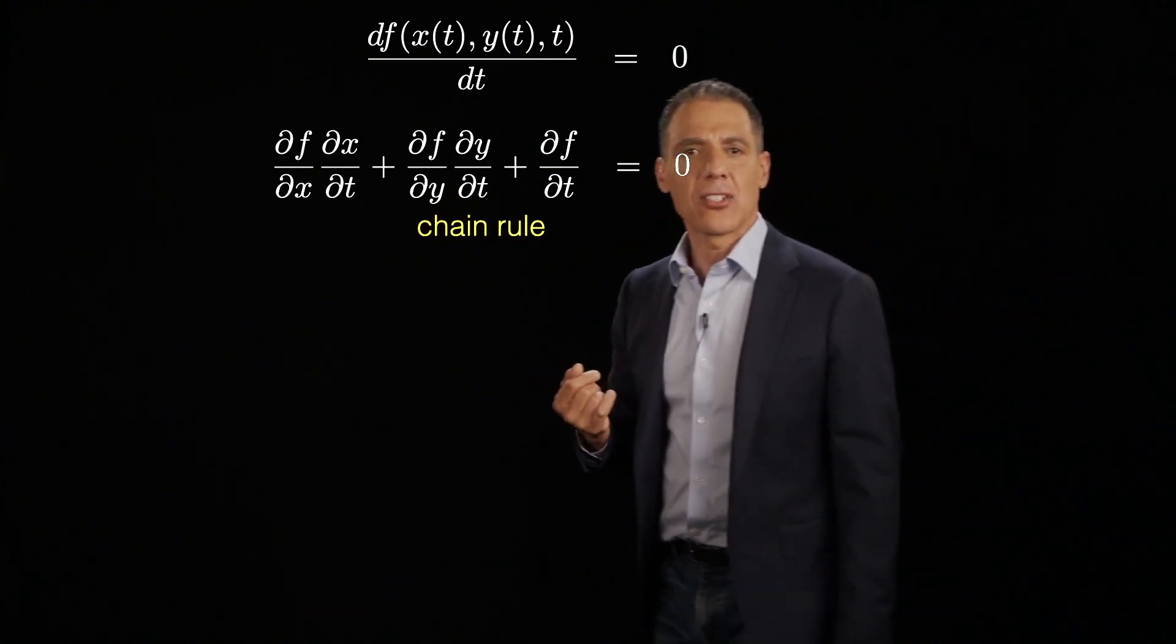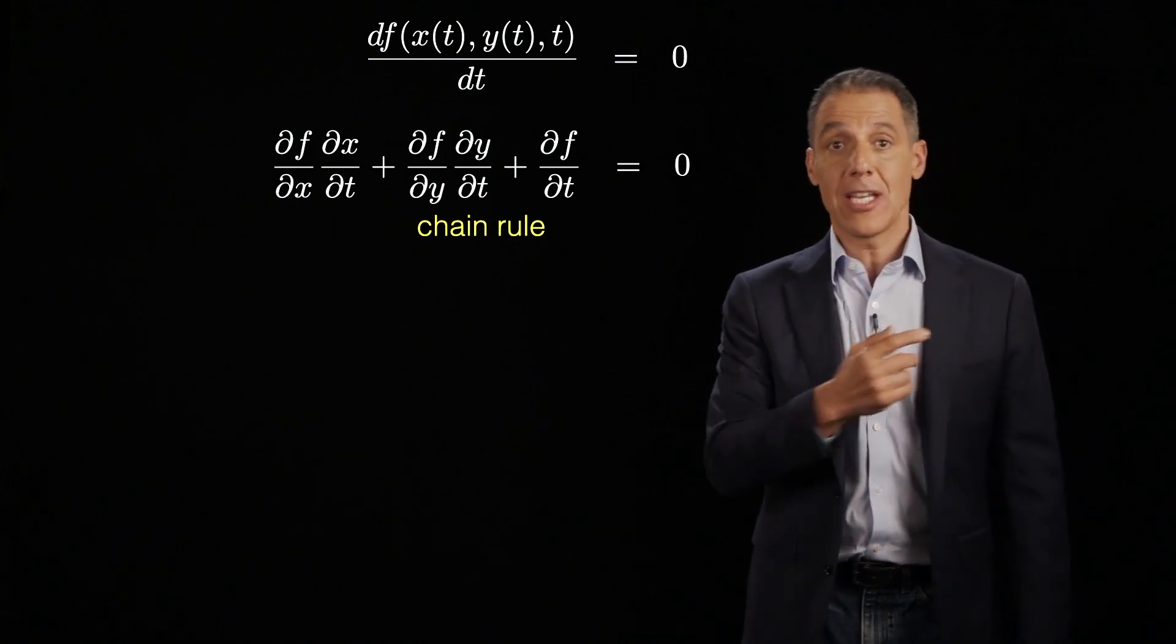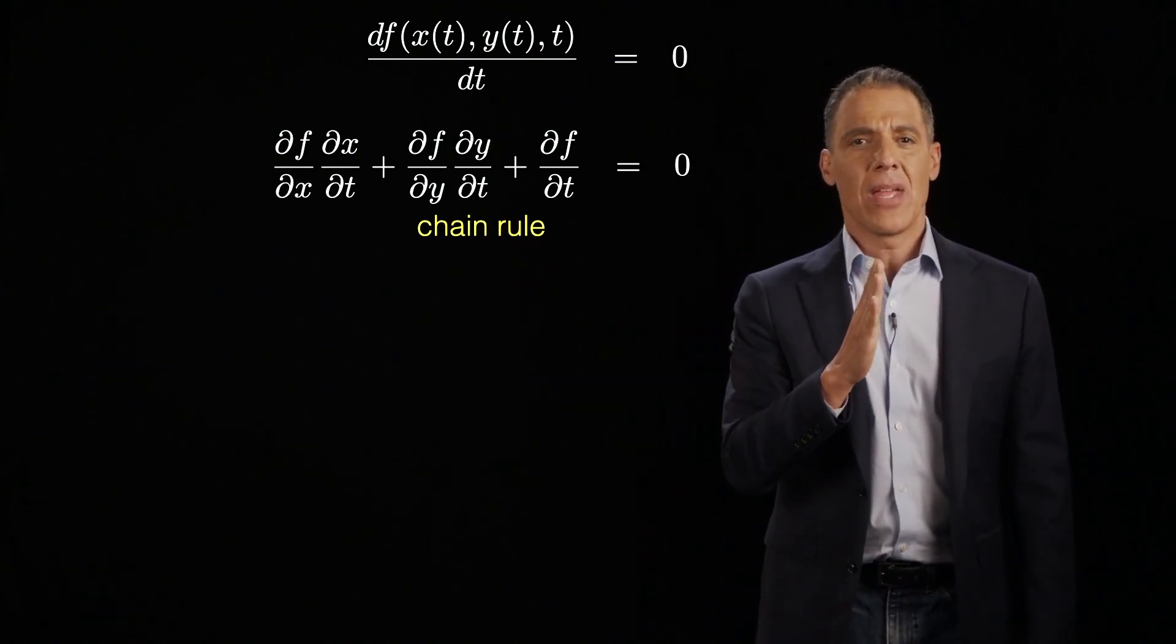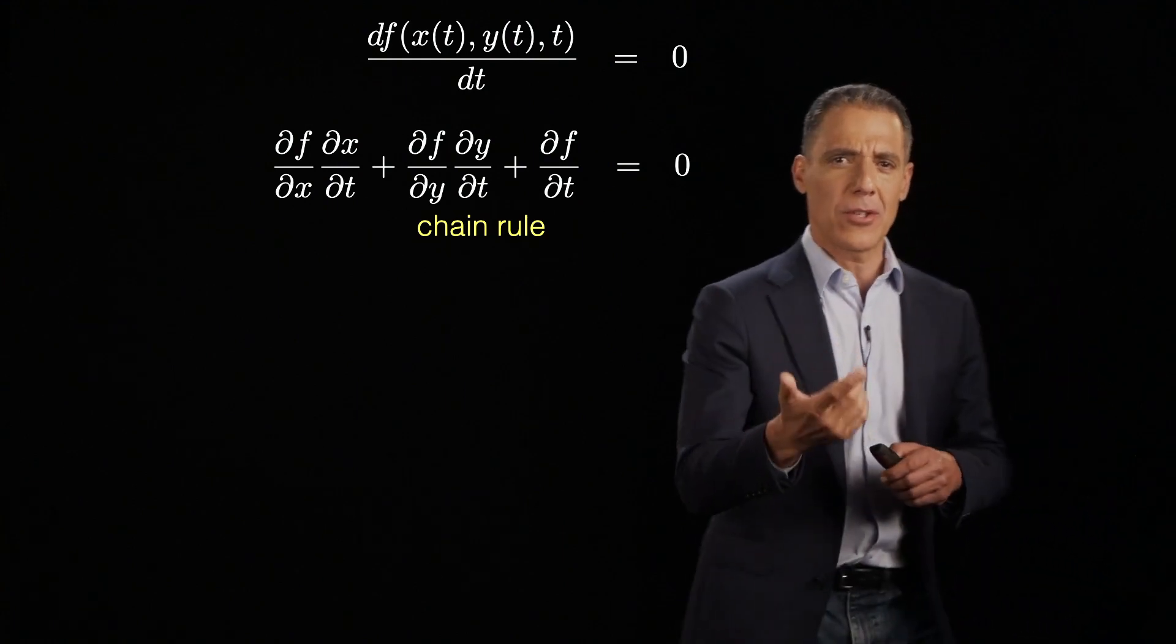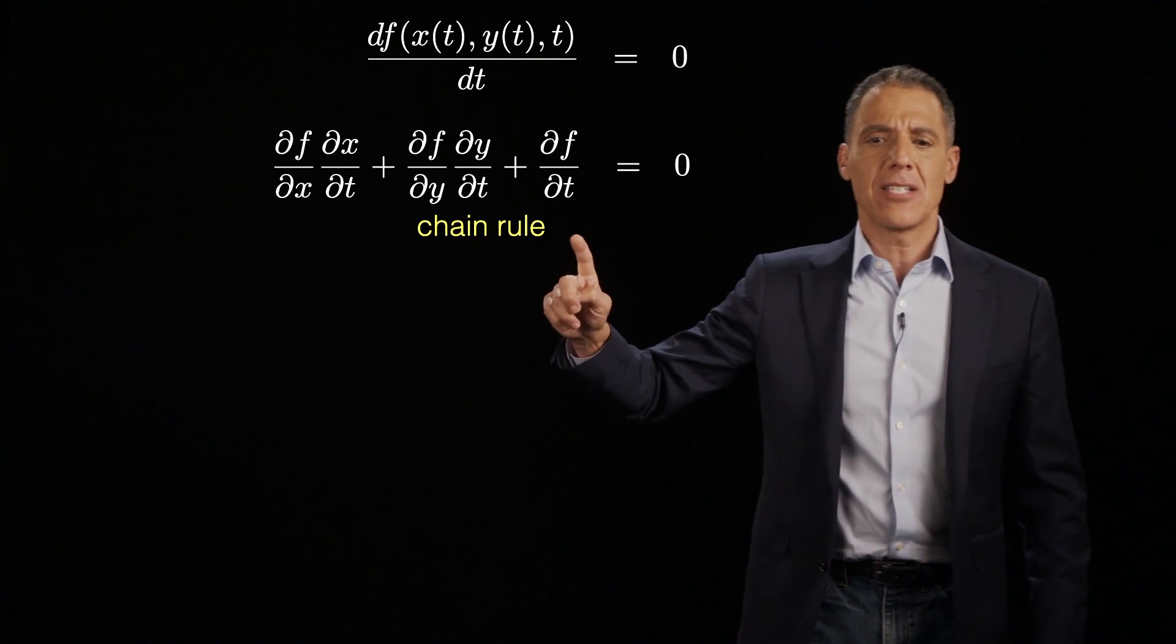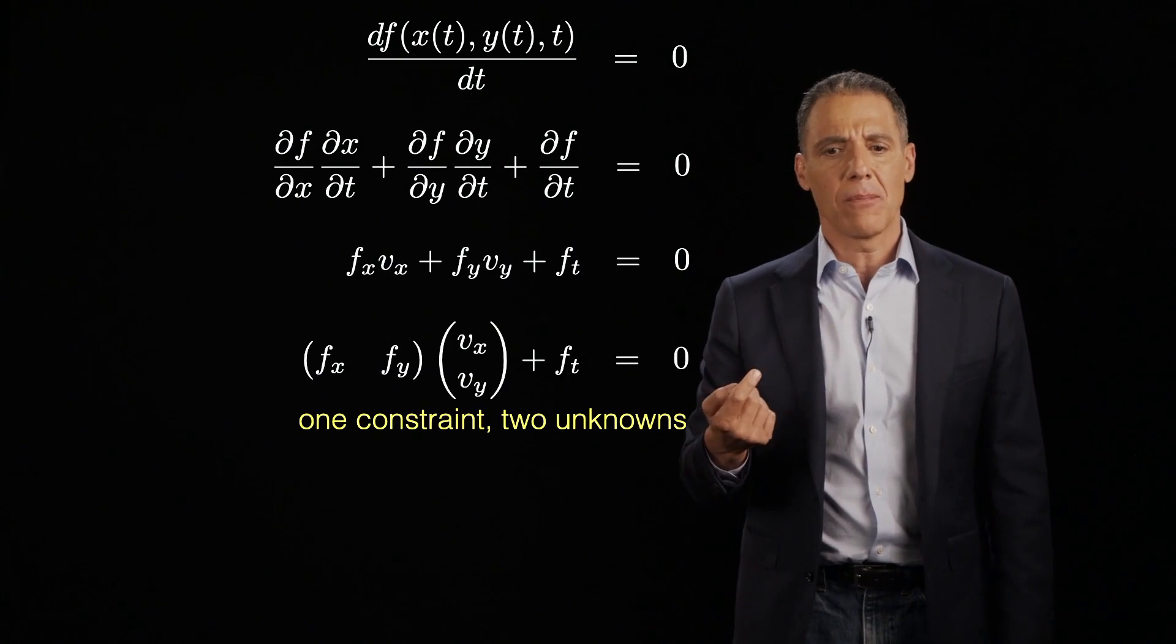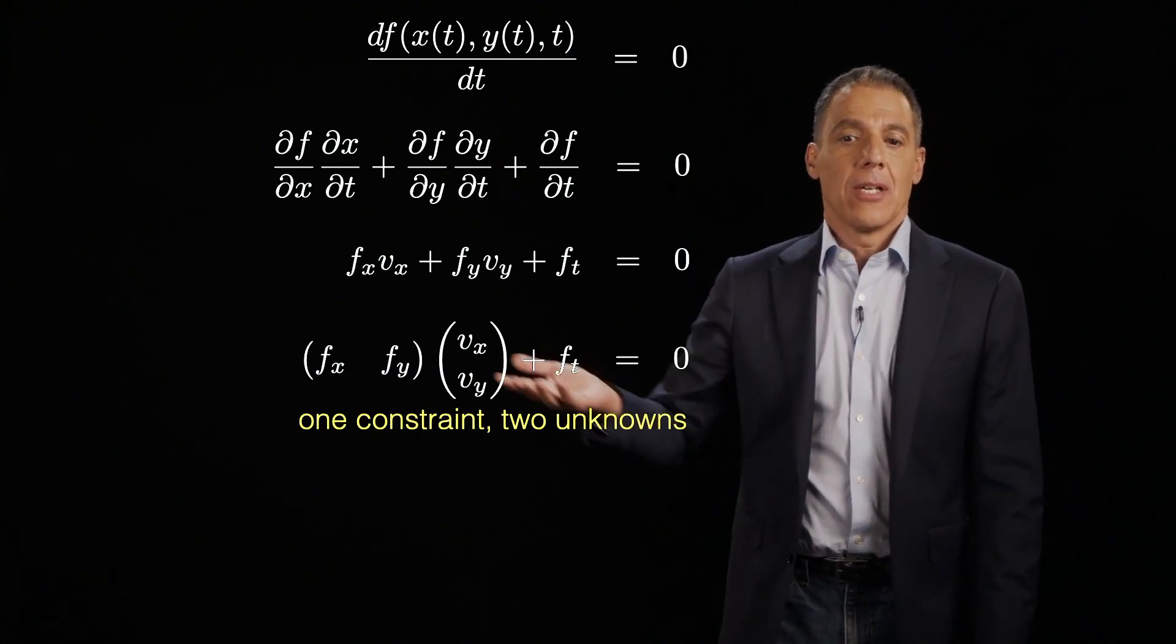What is df/dx? df/dx is the derivative of the intensity in the x direction. We know how to do that. What is df/dy? It's the rate of change in the y direction. Now, I've got time here, which frame do I use? Do I use the first frame or the second frame? We'll get back to that in a little bit. What is dx/dt and dy/dt? It's the change in the x position as a function of time. Well, that's the motion. That's exactly what I want to estimate.